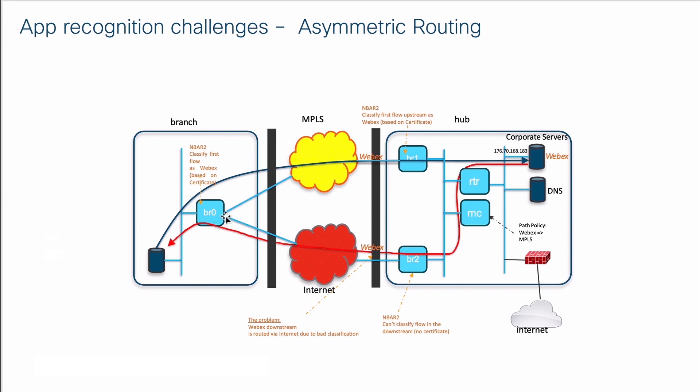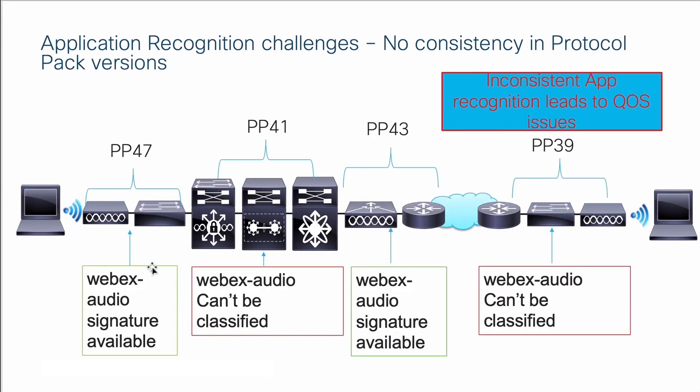The third challenge is asymmetric routing. For example, if Webex traffic is going via MPLS and internet simultaneously, the router receives traffic on two different interfaces and is not able to see the initial few packets it needs to recognize the application consistently. The last challenge is various network devices running different protocol pack versions.